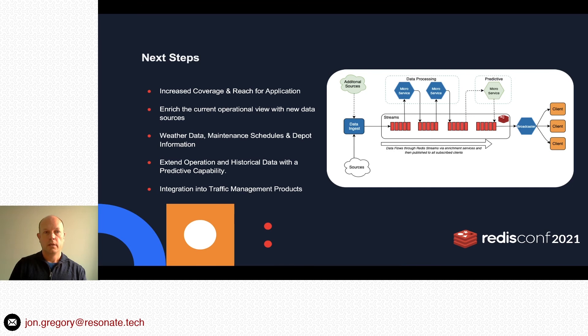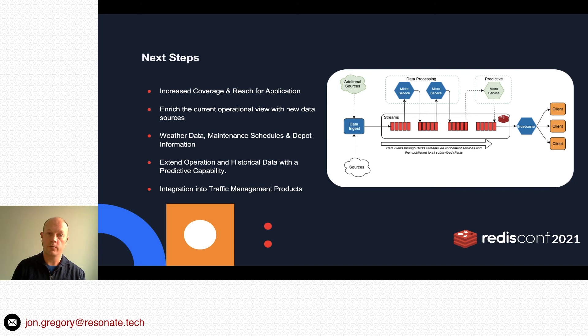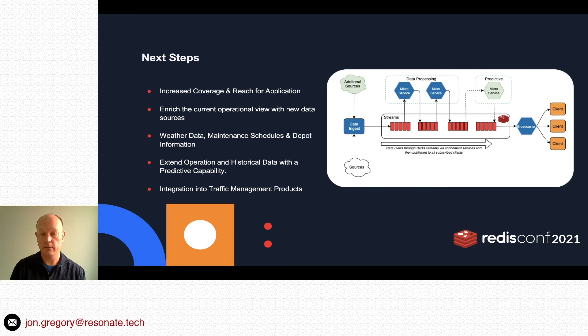For next steps: the core application ingests data, flows it through processes via Redis, and out through the Broadcaster. Redis is easily extendable — it's easy to add more readers on the stream to increase data coverage. We can bring in additional data sources to enrich the operational view, including weather data, maintenance schedules, depot information, and predictive capabilities. We can also integrate this view into other traffic management products within the rail network.